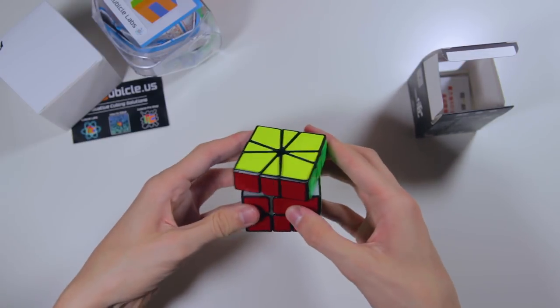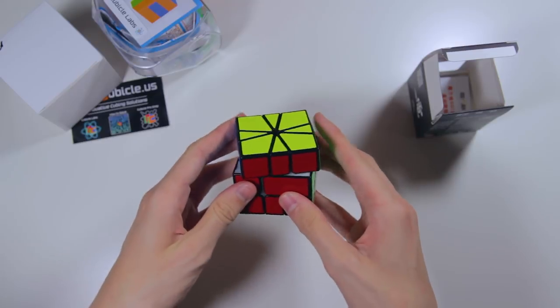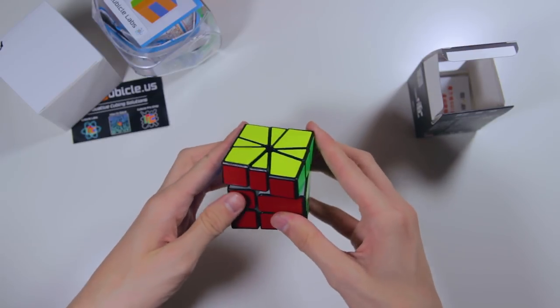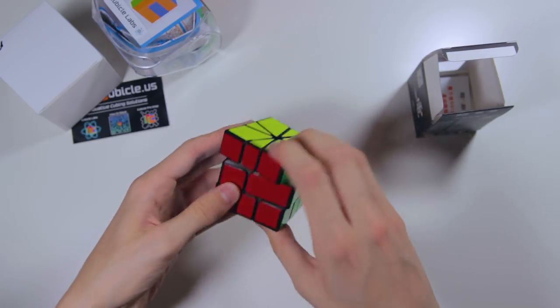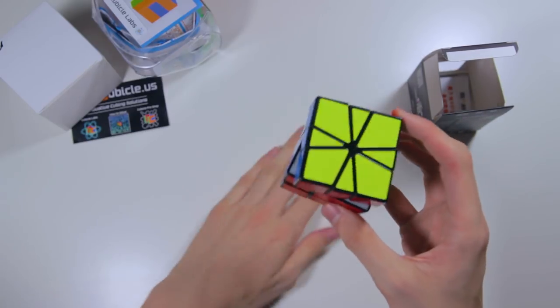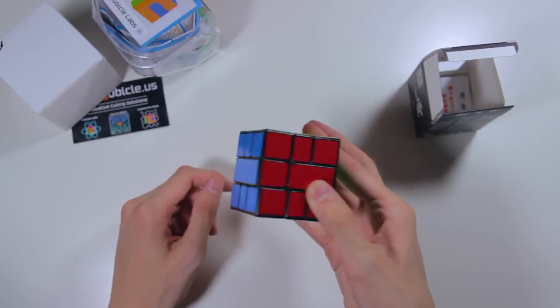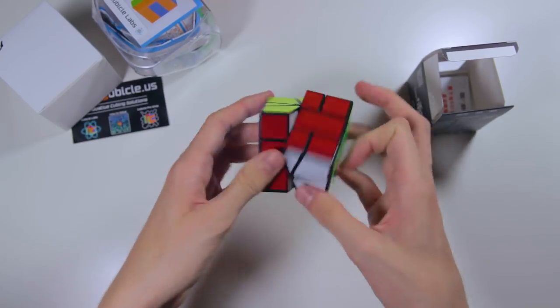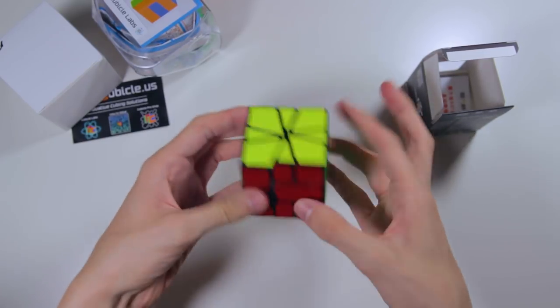And it has decent corner cutting. I don't know how you really measure corner cutting on a square one. And it does feel slightly blockier than my Chi and less flexible - it's more put together. That could be a good thing. I'll have to test it out. It's not really doing great right now, but I can tell that it needs to be broken in.